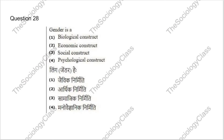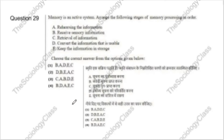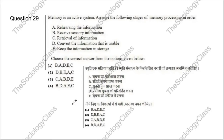Question 28: Gender is what — biological construct, economic construct, social construct, or psychological construct? A very easy question, and sociology students definitely know this. The correct answer is C — gender is always a social construct.